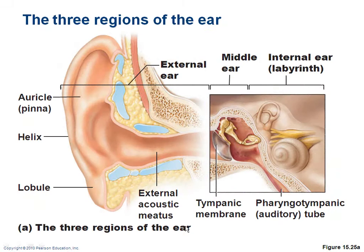Just to recap: we have our external ear, our middle ear, and our internal ear. Make sure you know the parts of each. For example, the malleus is in the middle ear, not the external ear.